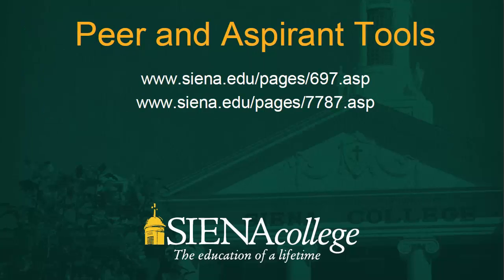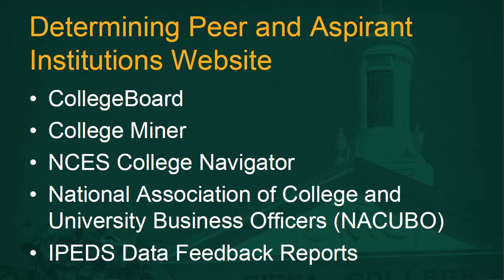There are several web applications that can help to select a set of peers. A partial list has been compiled by the Office of Institutional Effectiveness and can be found at www.siena.edu/pages/697.asp. There is also a link to Peer Tools at page 7787.asp. Some of these links will be listed at the end and linked in the description. Now I will demonstrate some of those applications listed on page 697.